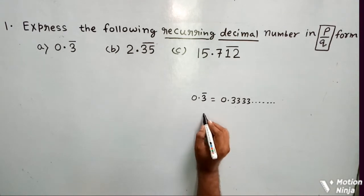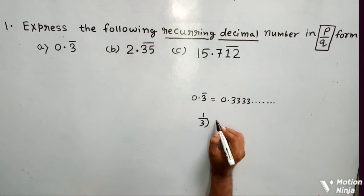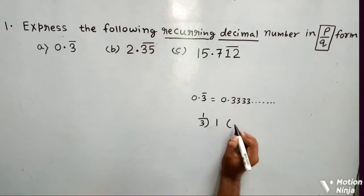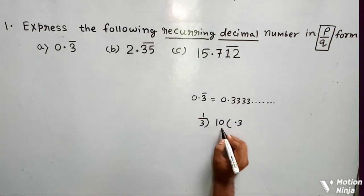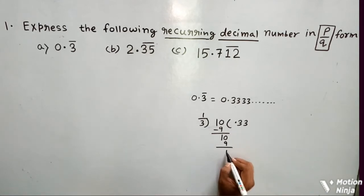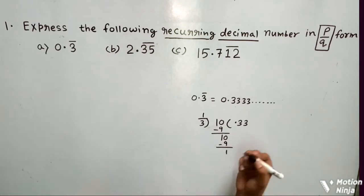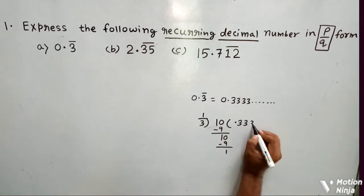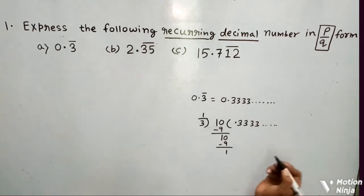Now suppose if I take a fraction 1 by 3 and divide this 1 by 3. See, for the decimal I am getting here 0. Now 3 into 3 is 9. After subtraction I get 1. Then again for decimal I get 0. Then again 3 into 3 is 9. So this division process is not going to end and it will continue like this.